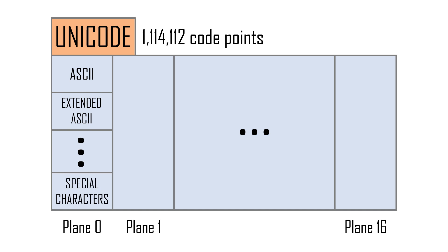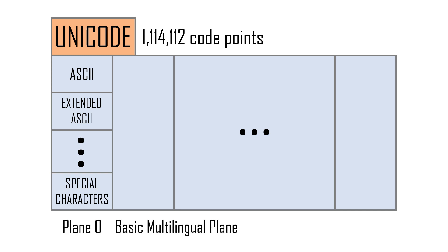The basic multilingual plane, for example, is the first plane — plane 0 — and it contains the most widely used characters and writing systems. The first 128 code points in the basic multilingual plane comprise the ASCII subset of Unicode and represent the basic Latin block.